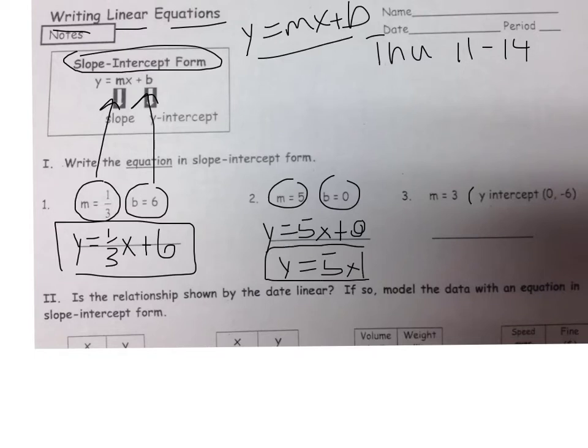This one, they give us our y-intercept in a little bit different way. Instead of calling it b, they call it the y-intercept. This is still the same thing as b = -6. So y equals, instead of m, we put in the 3x. And instead of a plus b, now we have a minus 6. So y = 3x - 6.